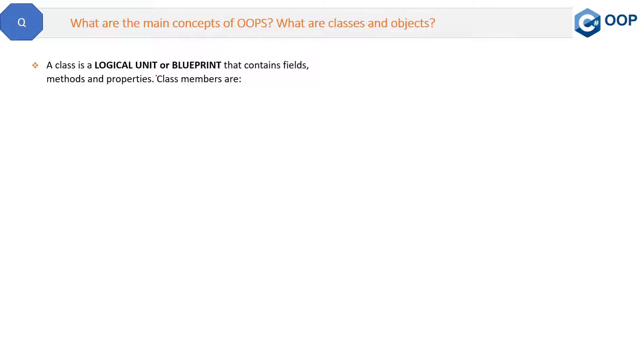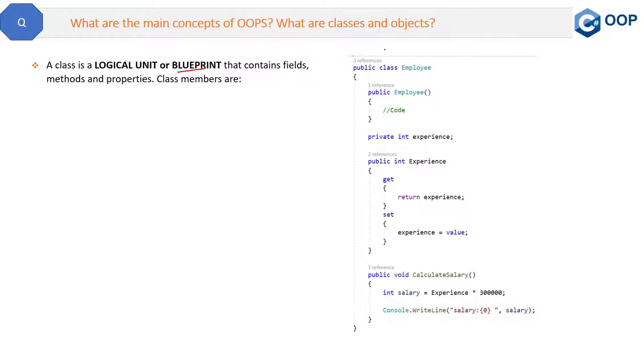A class is a logical unit or blueprint that contains fields, methods, and properties. There are some class members. Let's see a code example of a simple class. See, here is an Employee class we have.